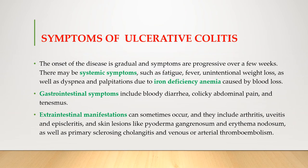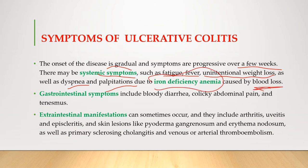Moving on to symptoms of ulcerative colitis, the onset is gradual and symptoms are progressive over a few weeks. There may be systemic symptoms such as fever, fatigue, and unintentional weight loss, as well as dyspnea and palpitations due to iron deficiency anemia caused by blood loss from ulcerative colitis.